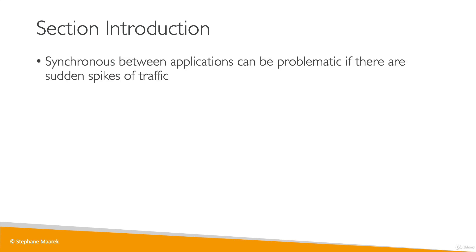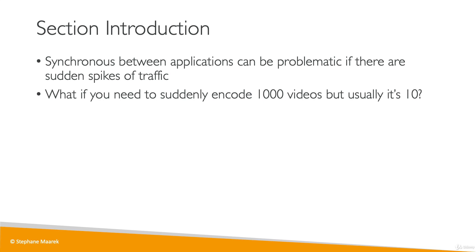If we use synchronous communication between applications, it could be a problem. For example, what if you have a sudden spike of traffic — what if you need to encode 1000 videos but usually it's only 10? In that case, the service you're talking to may get overwhelmed, and things may fail.